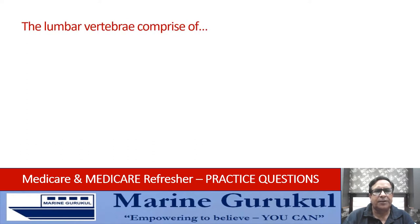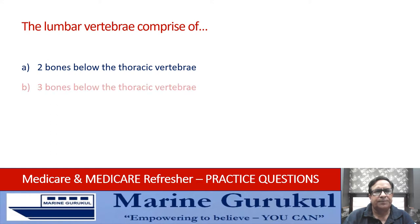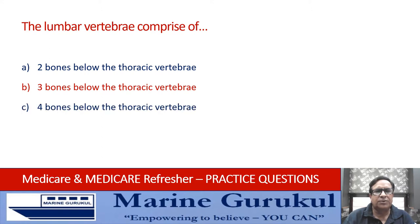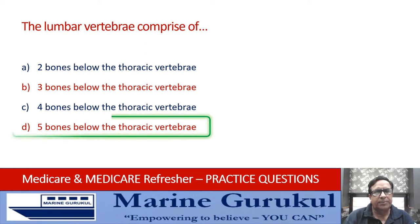The lumbar vertebrae comprises of how many bones below the thoracic vertebrae — two, three, four, or five? The answer is D — lumbar vertebrae comprise of five bones below the thoracic vertebrae.